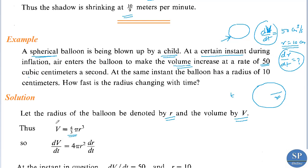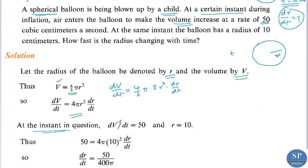Differentiating with respect to t, since v and r are both functions of t, we have dv by dt equal to 4 by 3 into pi into 3r squared into dr by dt. That is, dv by dt equals 4 pi r squared into dr by dt. Now we are given that dv by dt equals 50 and r equals 10. We need to find dr by dt.